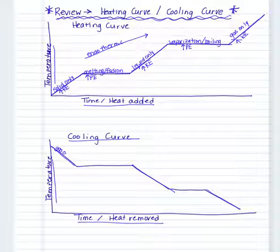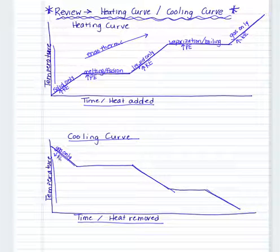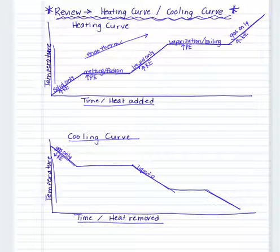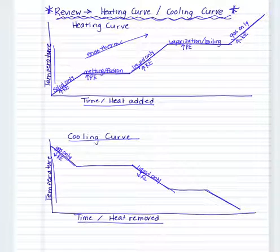We start with gas only. Because the temperature is going down, that means the kinetic energy is going down. We go to liquid only — again, decrease in temperature means there is a decrease in kinetic energy. Our third slanted line is solid only; again, temperature is decreasing, so we are decreasing the kinetic energy.